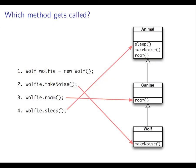When we create ourselves a new Wolf animal and we send it in turn each of the three messages that it understands, in each case it gets the implementation of the method from the most specific class where one exists. So MakeNoise comes from the Wolf class itself, Roam comes from Canine, and Sleep still comes from Animal.